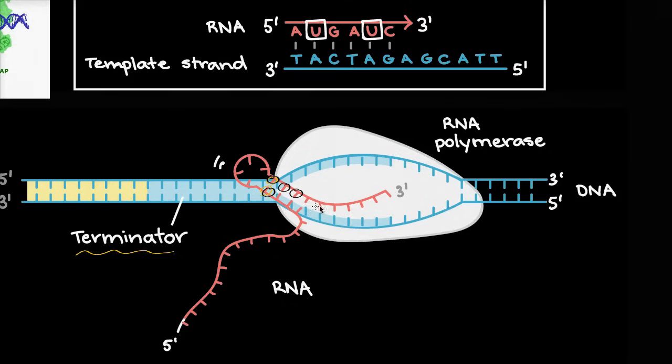Now if we're talking about a prokaryote, we're done. We would have formed, this would be our messenger RNA, which then can go to a ribosome, and then be translated into a protein.